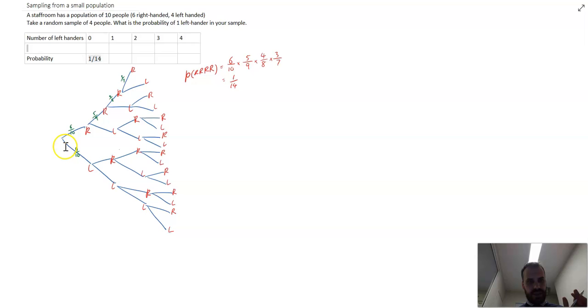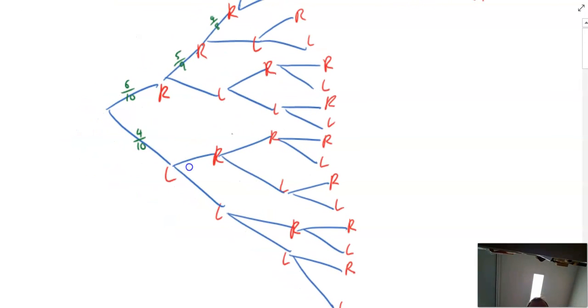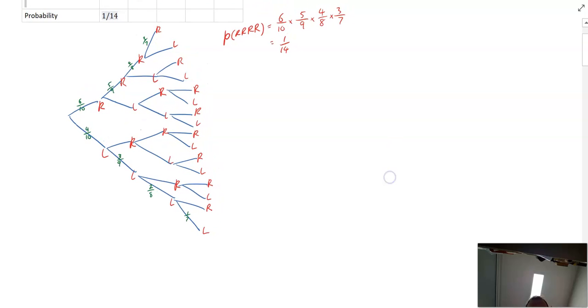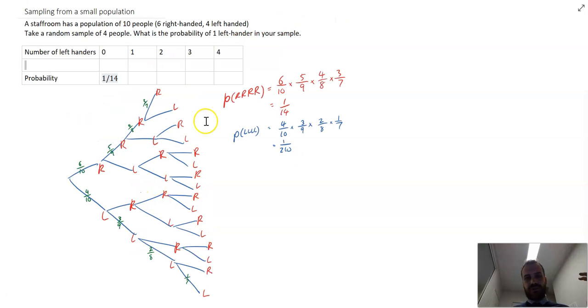I can do a similar one down the bottom here, left, left, left, left. That's the second easiest one to do. The probability of getting a left-hander is four in ten, but then when I pick my next one, it's going to be three in nine, because there's only three left in the group, and then two in eight, and then one in seven. And when I do that calculation, it'll be this times this times this times this. One in 210, and that's right there.